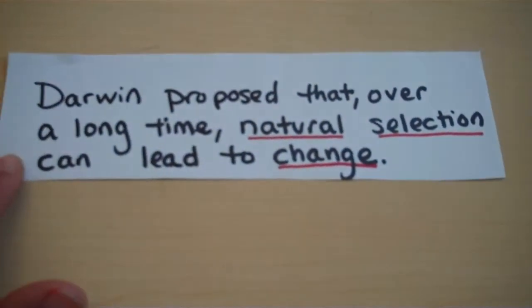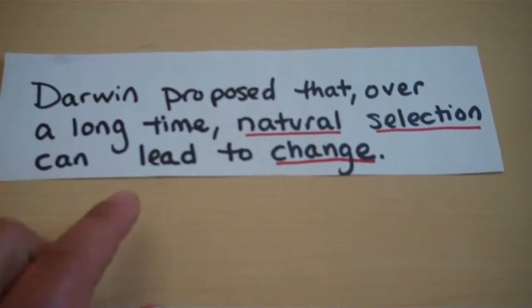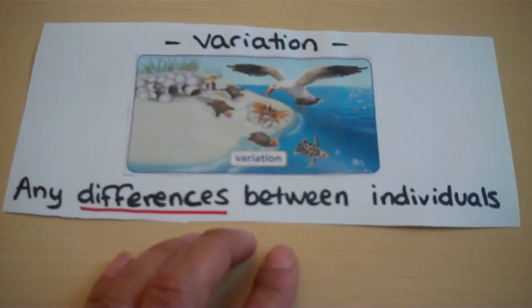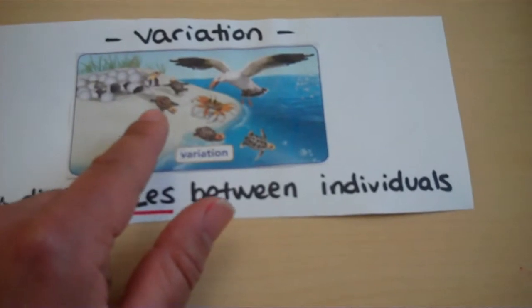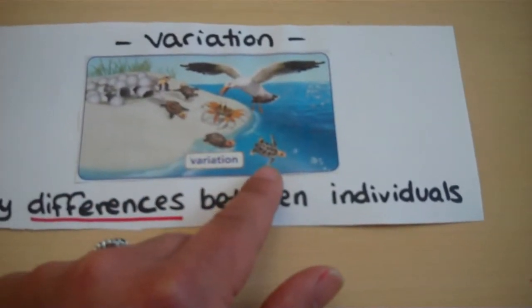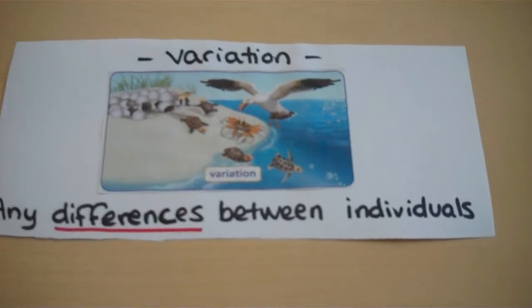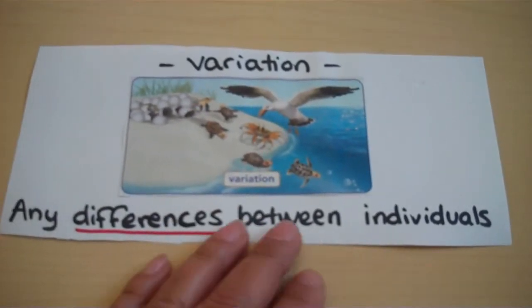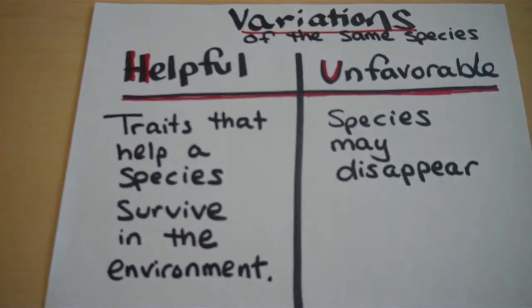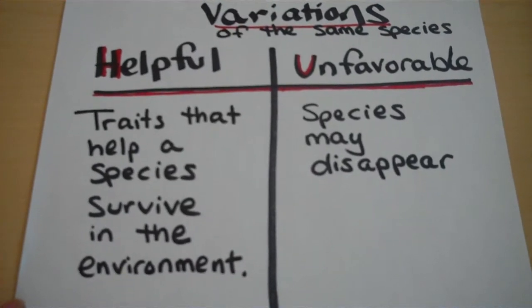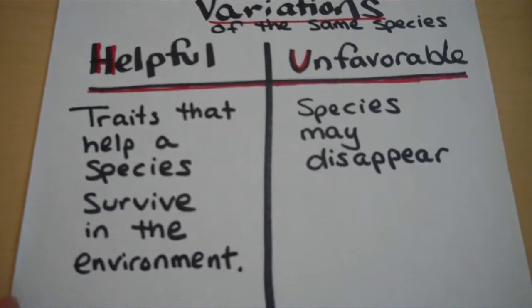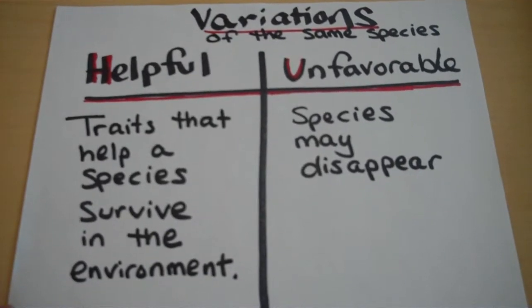Darwin proposed that over a long time, natural selection can lead to change. This kind of change gives variation — differences in an individual. Some variations of the same species can be helpful or unfavorable. If it's helpful, those are traits that can help a species survive in the environment. Unfavorable species may disappear.